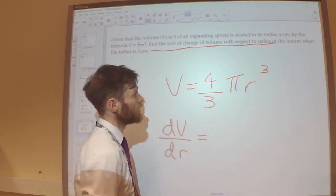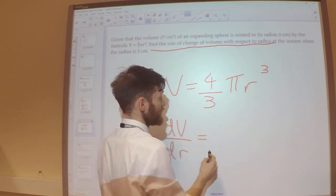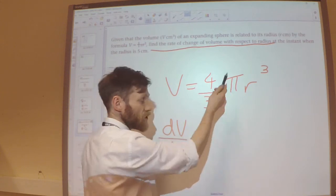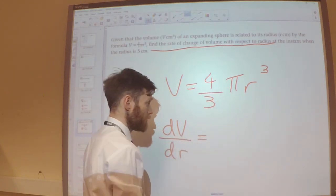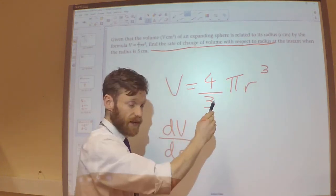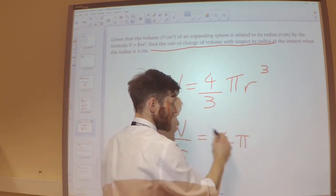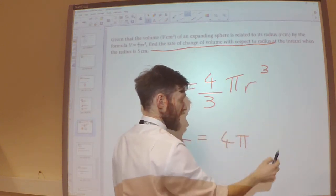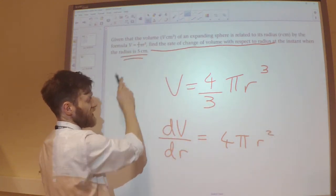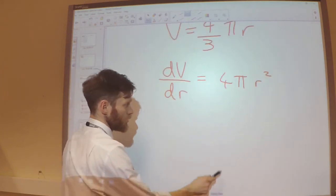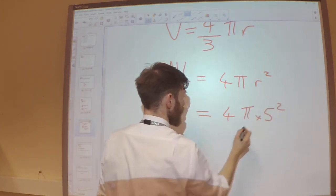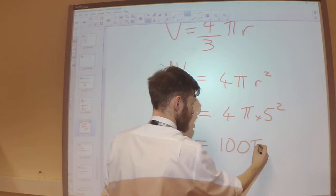Differentiating V = 4/3 π r³: the 4/3 times π — remembering pi is just a constant, 3.1415 — multiplied by the 3 gives 4π. The r is now to the power 2, so dV/dr = 4πr². Evaluating at the instant when the radius is 5, we substitute in: 4π times 5 squared gives 100π.